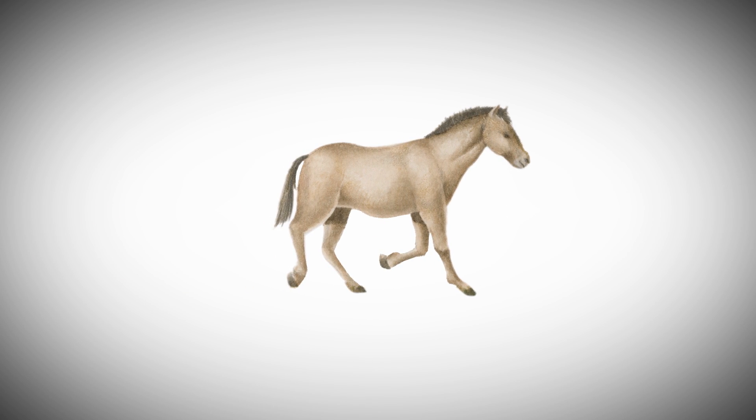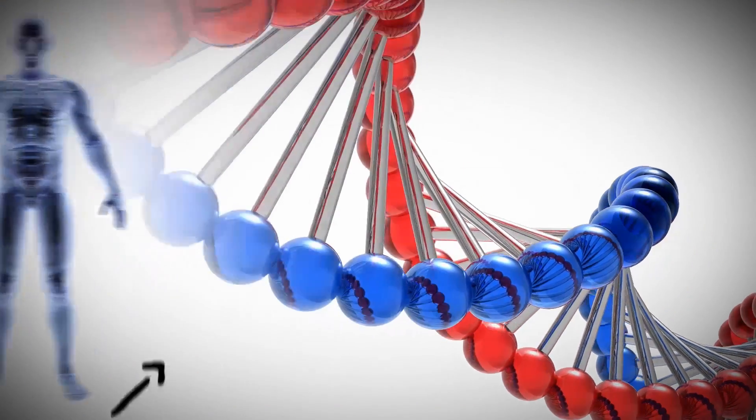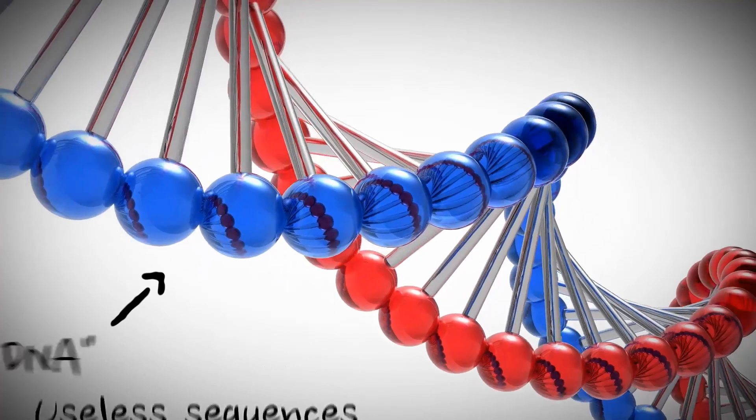Darwinists assume creatures evolved through random mutations. This leads to another assumption that human DNA must be full of useless sequences. They call it junk DNA.